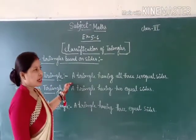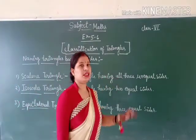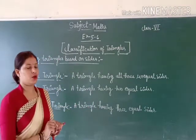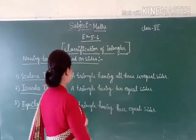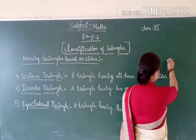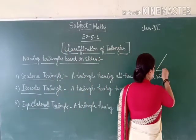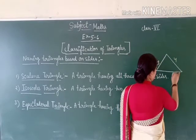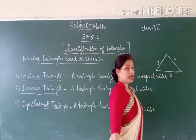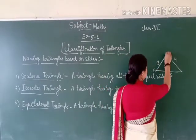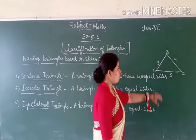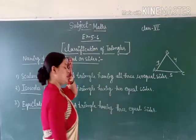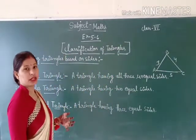The first is the scalene triangle. A scalene triangle is a triangle having all three unequal sides. For example, if a triangle has sides 3, 4, and 5 — all three sides are different, unequal — so what kind of triangle is it? It is a scalene triangle.